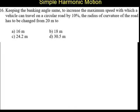Question number 16. Keeping the banking angle same, to increase the maximum speed with which a vehicle can travel on a circular road by 10 percent, the radius of curvature of the road has to be changed from 20 meters to: